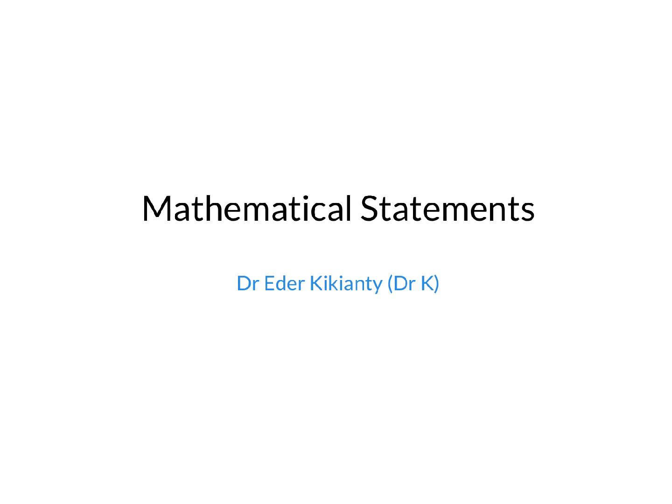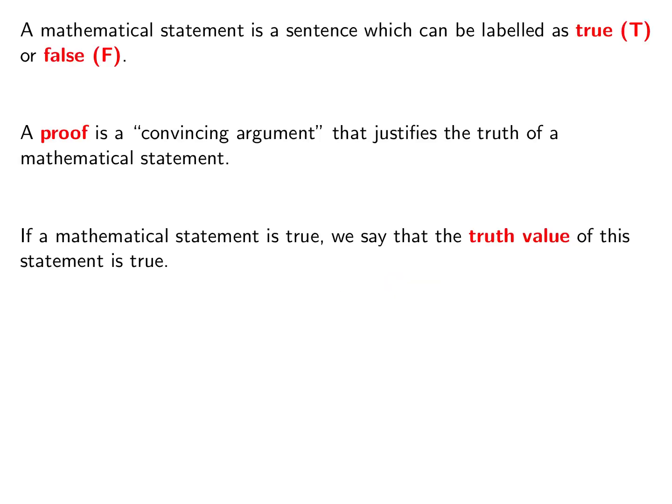Hi, this is the first video in our proof writing portion of the series — the largest portion of the series — and we're going to start with understanding what a proof is. But before that, we need to talk about what a mathematical statement is. A mathematical statement is a sentence which can be labeled as true or false. Thus, a proof is a convincing argument that justifies the truth of a mathematical statement.